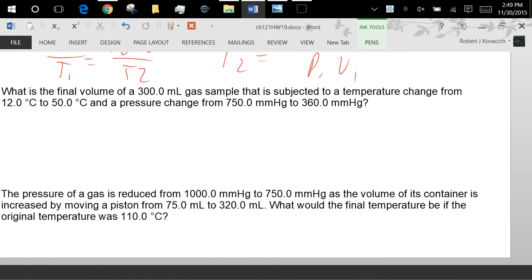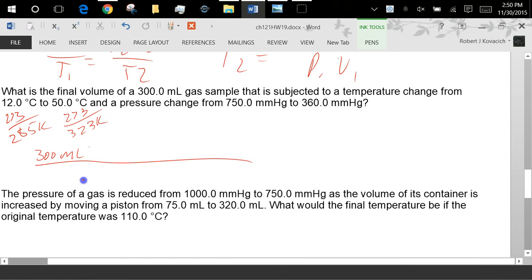What's the final volume of 300 milliliters sample of gas that is subjected to a temperature change and a pressure change? Okay, so what am I looking for in this problem? A volume. I'm given a temperature increase and I'm given a pressure decrease. So 273 here, 582 kelvin, 273, 323 kelvin. And so I'm going to start with 300 milliliters. And the temp goes up, so what would that do to the size of my gas? Make it go up. So I'm going to take my big number, my 323 K here, and my 285 K, put that on the bottom, and then they both cancel out.